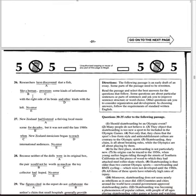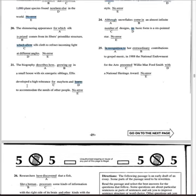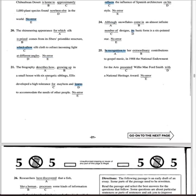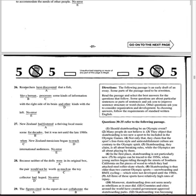Number 26: It could be 98% E. Let's check: 'Researchers have discovered that a fish, like a human, processes...' — a fish and a human are being compared. 'Fish processes' is correct, so A, B, and C are out. 'Some kind of information with the right side of its brain' — bringing the fish and human together. So it's E.